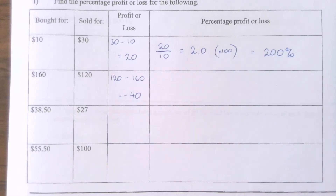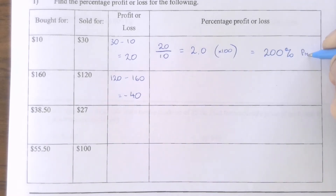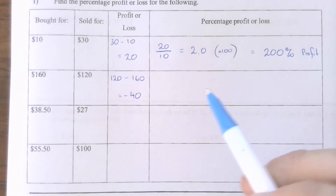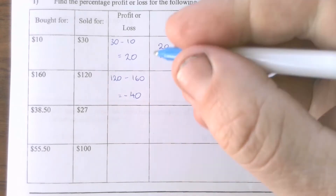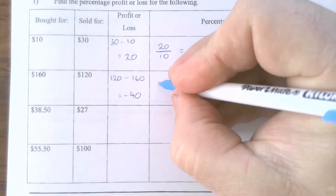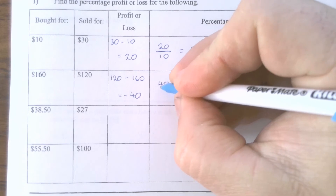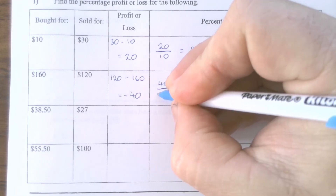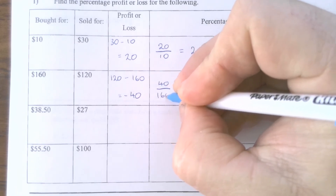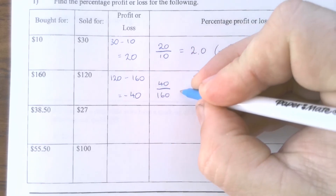That's 200% of the original price — the original amount plus an additional $10 makes my $20 profit. So it's the percentage of profit, not overall.